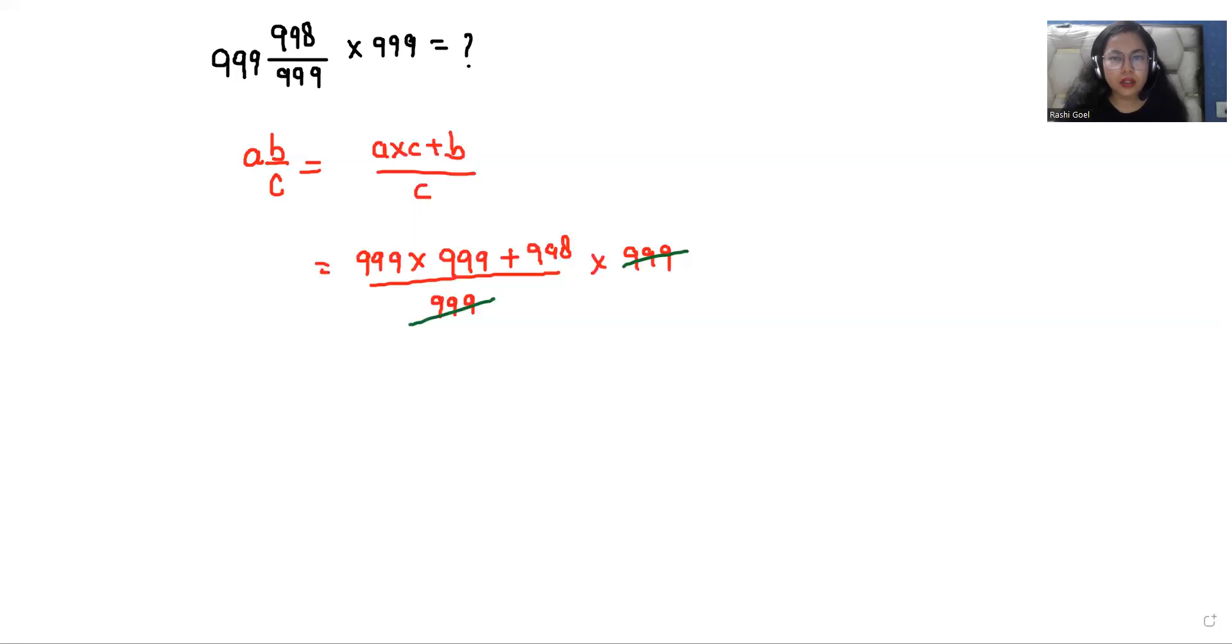Now I can write it as 999 times 999 as 999 square plus 998 over 999. We can write it as 1000 minus 1 square plus 998.